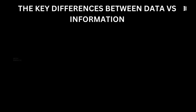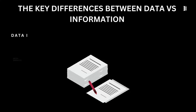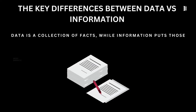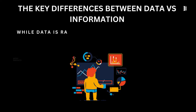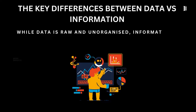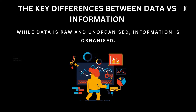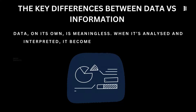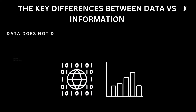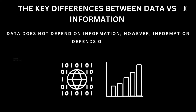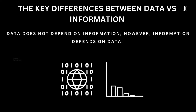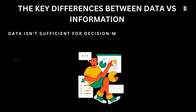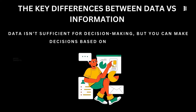The key differences between data versus information: data is a collection of facts, while information puts those facts into context. While data is raw and unorganized, information is organized. Data, on its own, is meaningless — when it's analyzed and interpreted, it becomes meaningful information. Data does not depend on information; however, information depends on data. Data isn't sufficient for decision-making, but you can make decisions based on information.